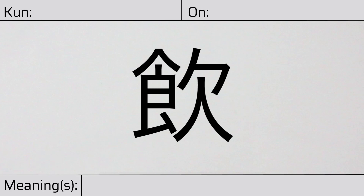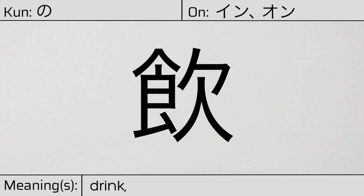Welcome to this lesson on Japanese kanji. Today, we'll be discussing this character. This kanji has kunyomi, or Japanese reading of no. And it has onyomi, or Chinese readings of in or on. This character has the meanings drink, smoke, or take.